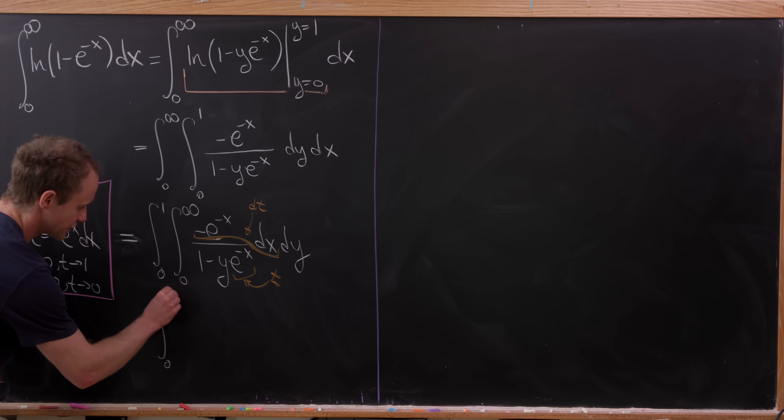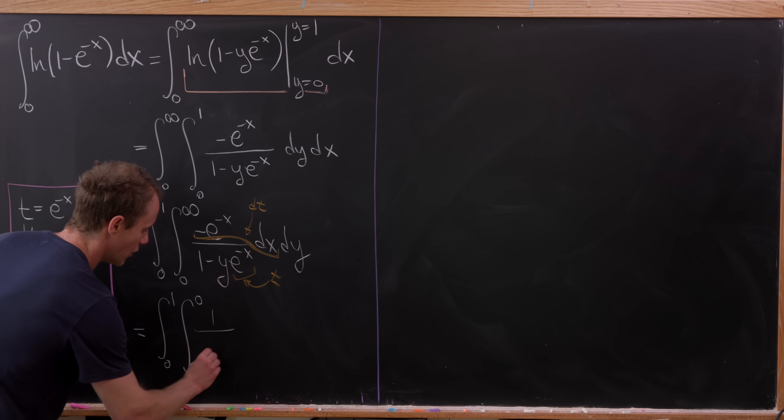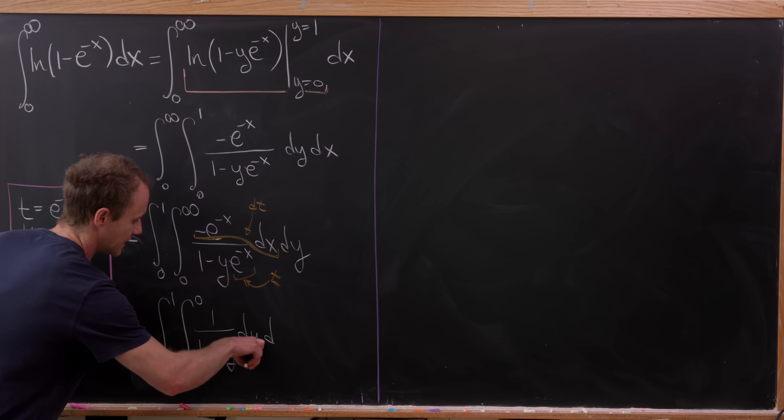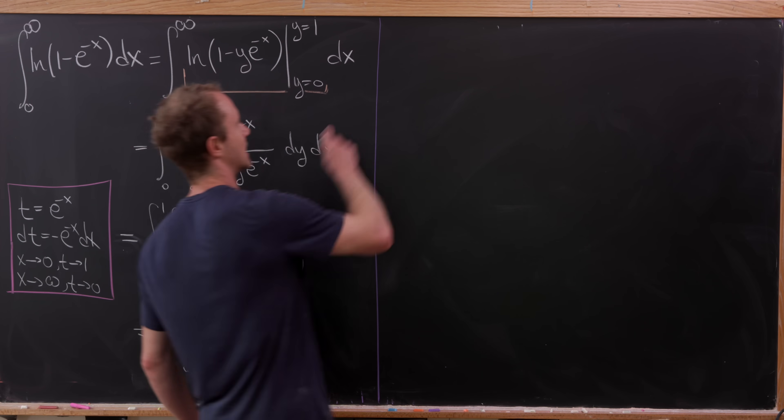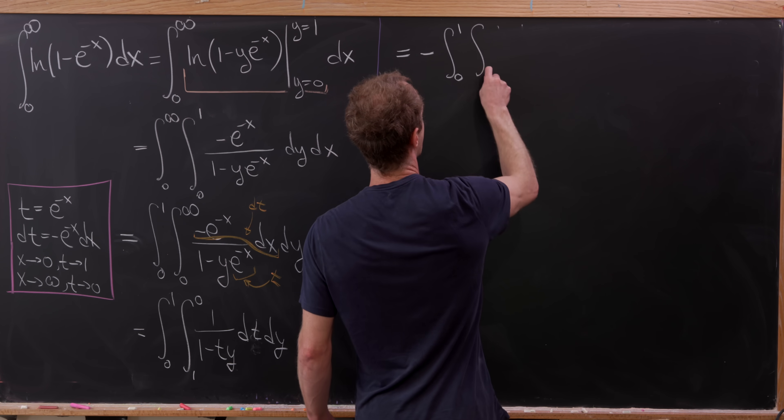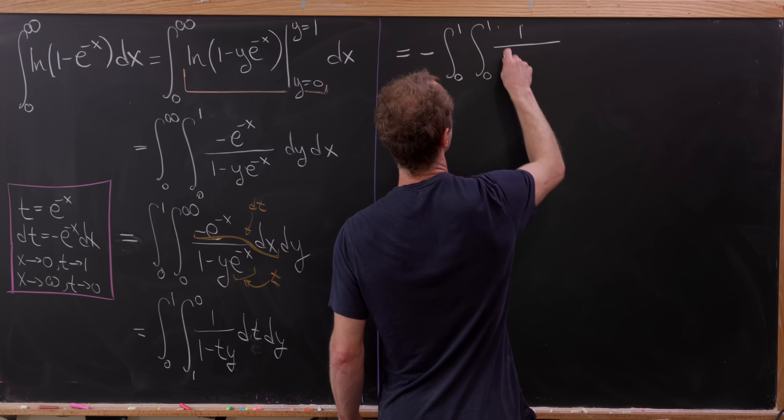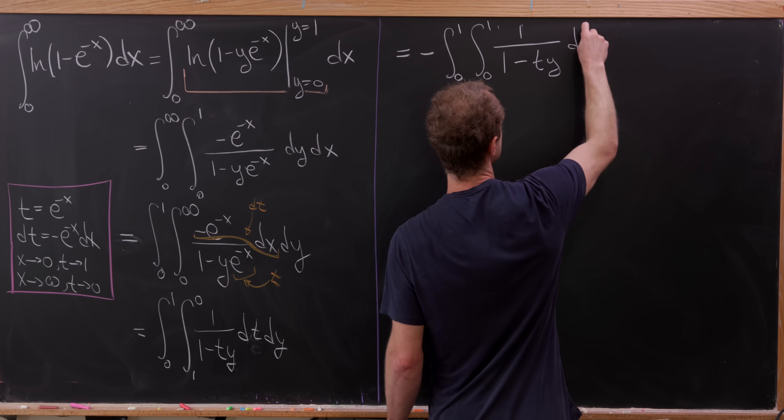So now I've got the integral from zero to one, and then the integral from one to zero, of one over one minus t times y dt dy. What I'll do next is rewrite this as an integral from zero to one instead of an integral from one to zero. I can do that by introducing a minus sign. So here we have minus the integral from zero to one of the integral from zero to one of one over one minus ty dt dy.